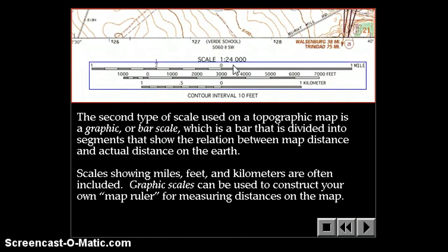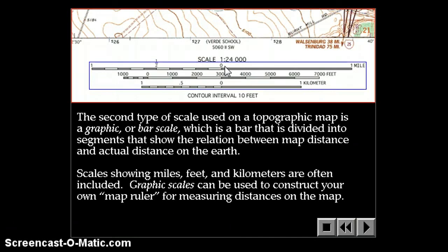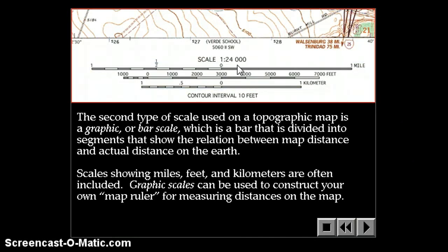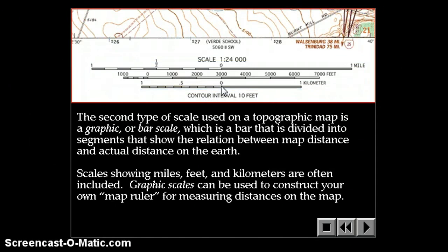But a common mistake that students make is they think that the distance from this point to this point is one mile, but it is not. It is two miles, because from the zero to the right is one mile, from the zero to the left is another mile. So this entire distance right here is a two-mile distance. And the same is true for the kilometer scale on this particular map.